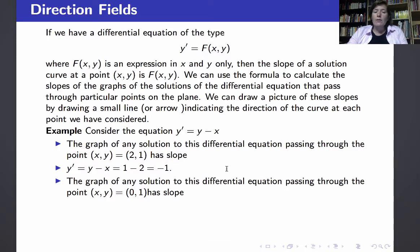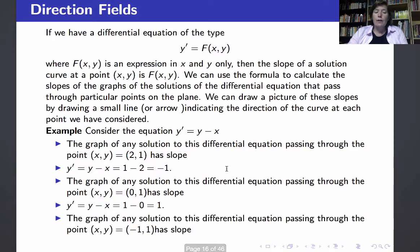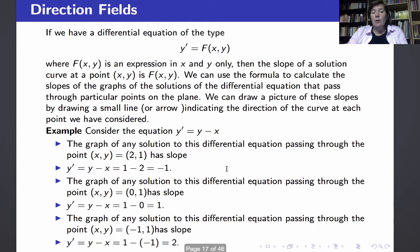Likewise, any solution to this differential equation passing through the point x equals 0, y equals 1 has slope 1 minus 0, which is 1, so the tangent line has slope 1. If a solution passes through the point x equals minus 1, y equals 1, then it has to have a slope 1 minus minus 1, which is 2. In other words, the slope of the tangent line must be 2.